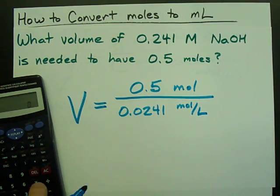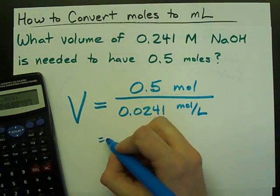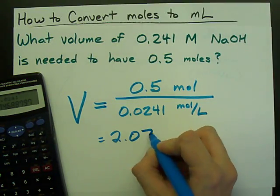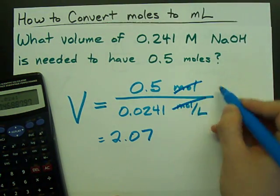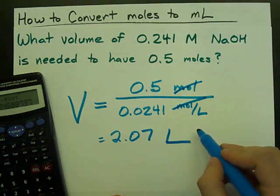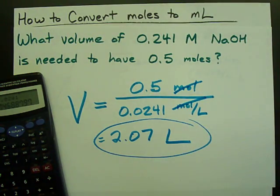Doing that on my calculator, 0.5 divided by 0.0241, I get 2.07. Moles cancel out, I'm left with liters, and that's the volume that's necessary.